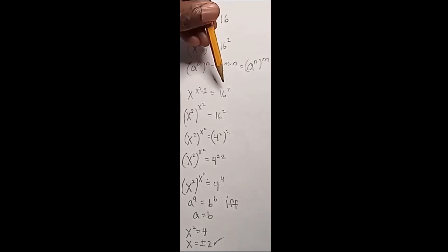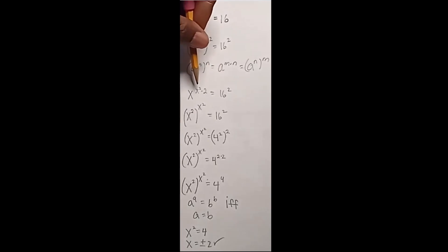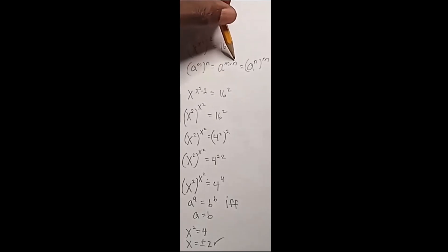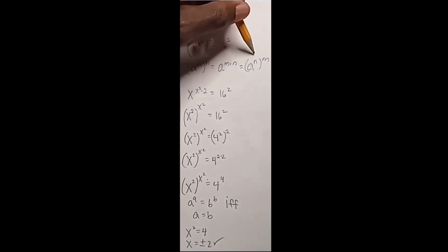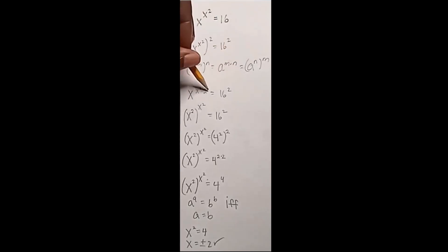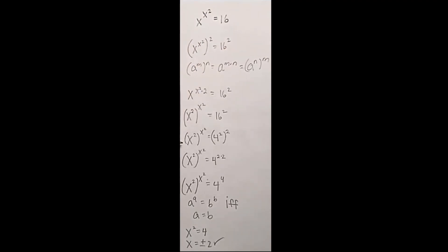This 16 squared remains the same, but I can now switch m and n — make it n and m. The 2 goes on the inside, x squared to the outside. So I've got x squared to the x squared.